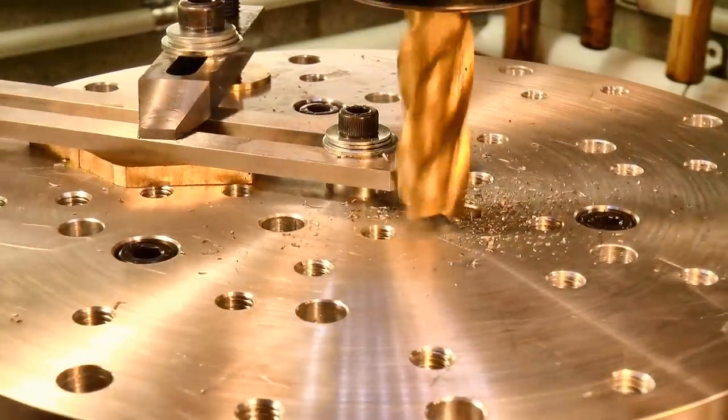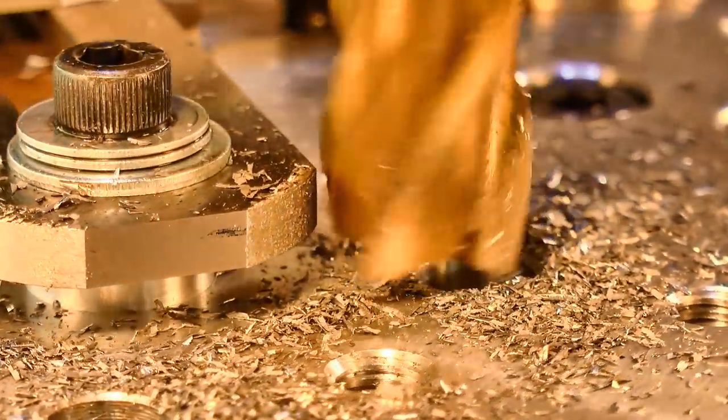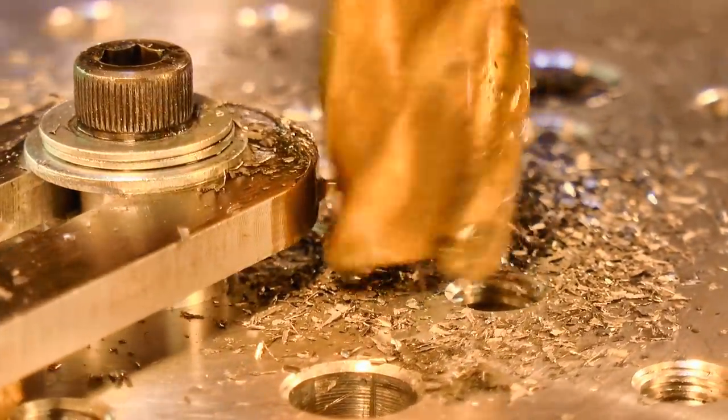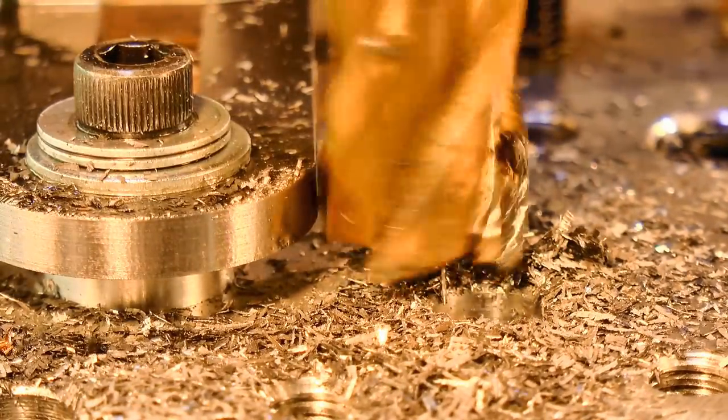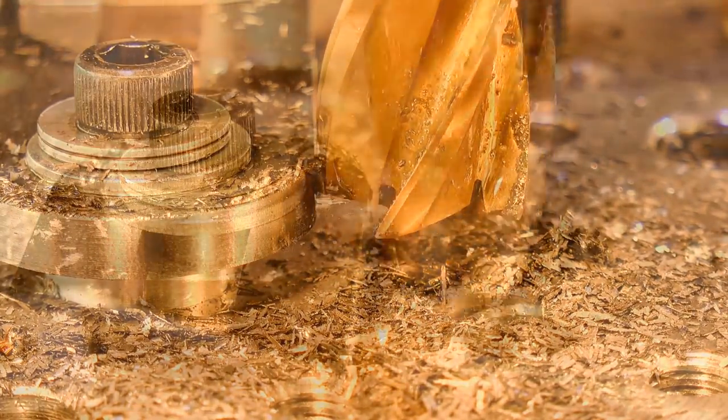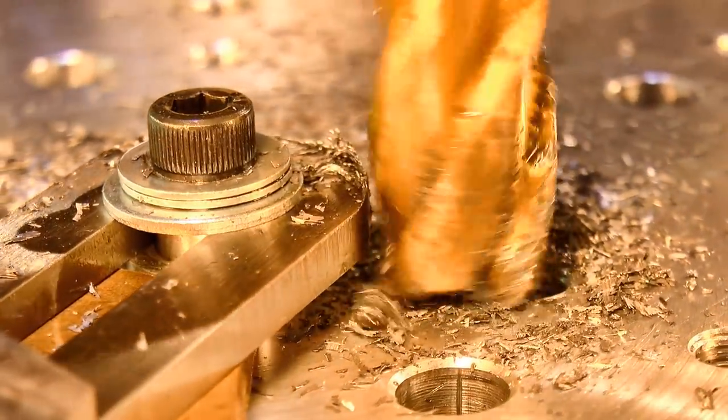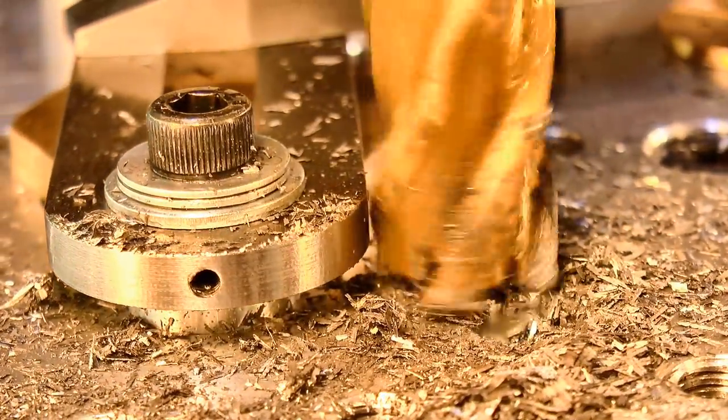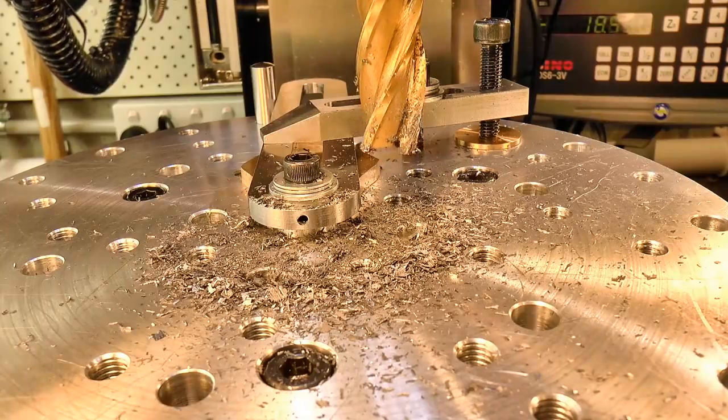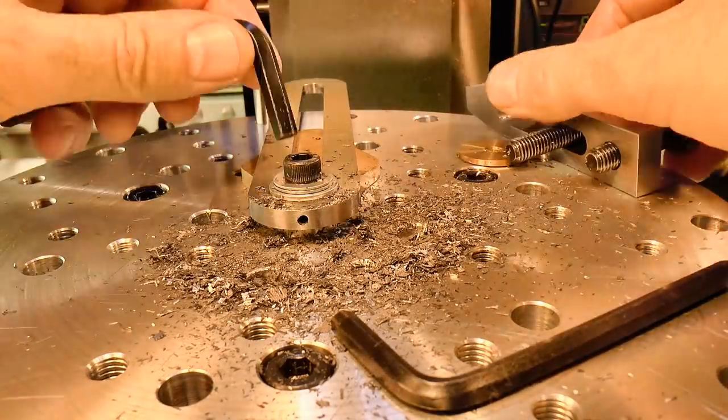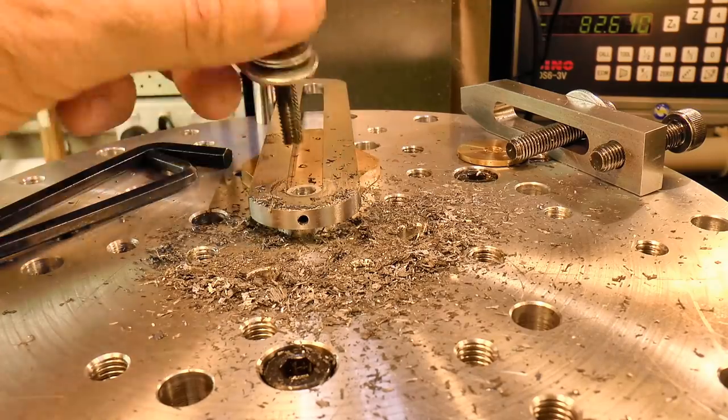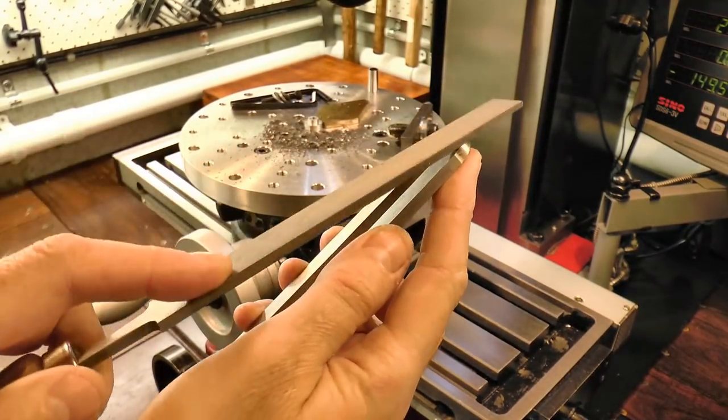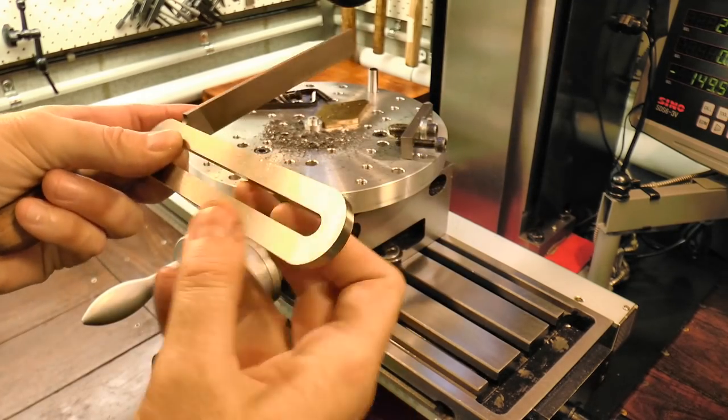So once it was locked down, I milled the curves on one end of the bed, and then did exactly the same thing for the other end. A quick deburr, and the depthing tool bed is complete.